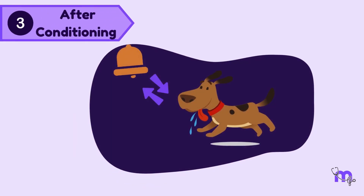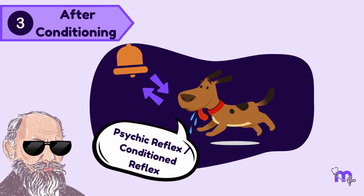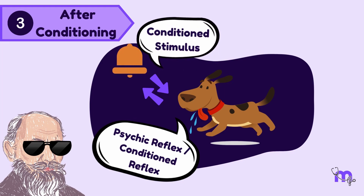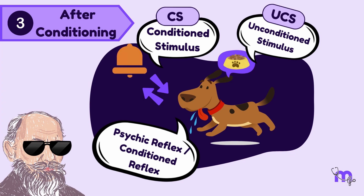And finally, in the third stage — after conditioning — the bond between the bell and salivation is established. Pavlov called it the psychic reflex or the conditioned reflex. Here, the conditioned stimulus, which is the ring of the bell, has been associated with the unconditioned stimulus, which is food, to create a new conditioned response, which is salivation upon ringing the bell.